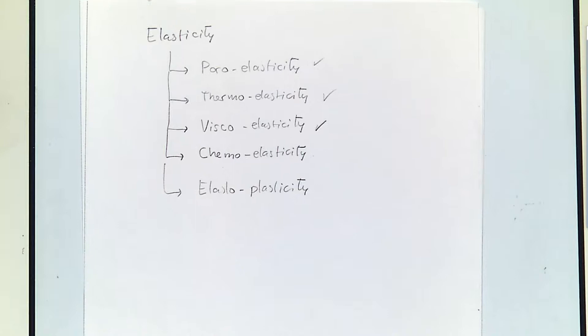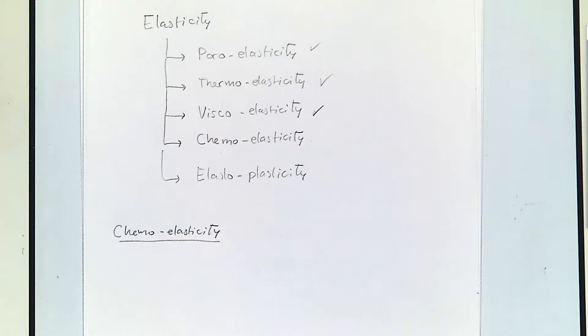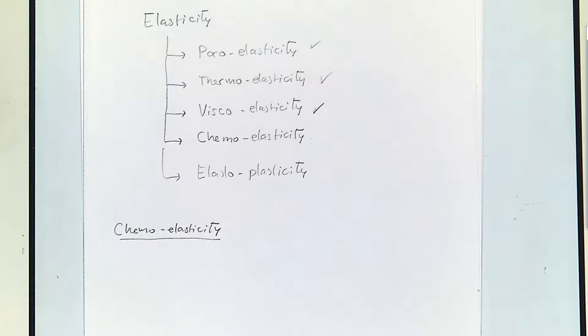In chemoelasticity, we want to take into account the variations in the chemical part of the fluid or the solid that are going to generate strains or stresses.